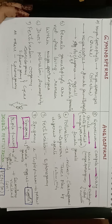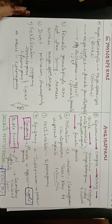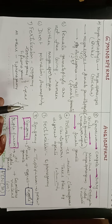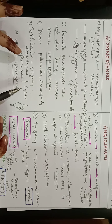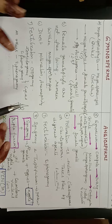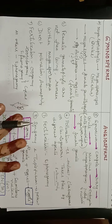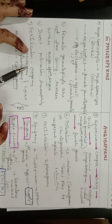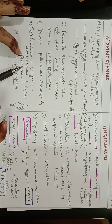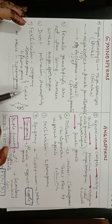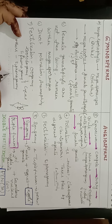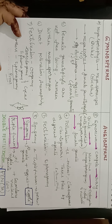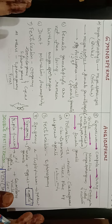Fertilization in gymnosperms is oogamy: large non-motile female gamete fuses with small motile male gamete. It can be zoidogamy (motile male gametes) or siphonogamy (male gametes carried through pollen tube). Both zoidogamy and siphonogamy are present in Cycas, whereas all other gymnosperms like Pinus show only siphonogamy — male gametes are non-motile.